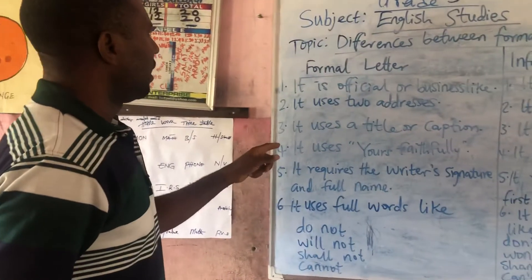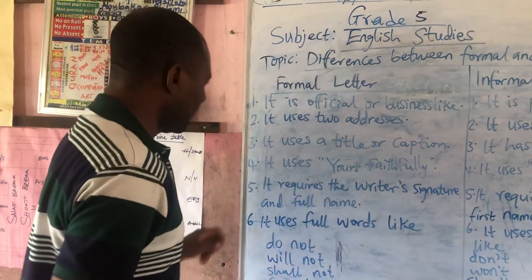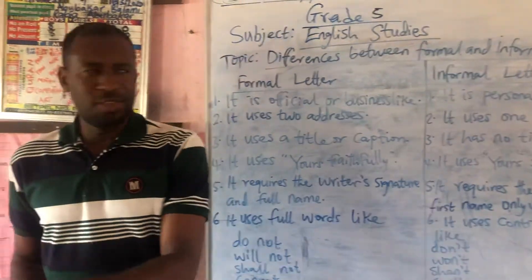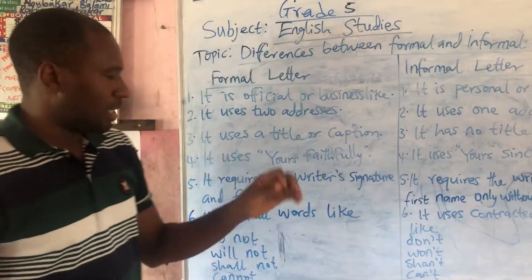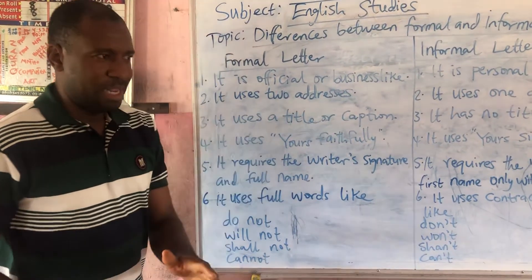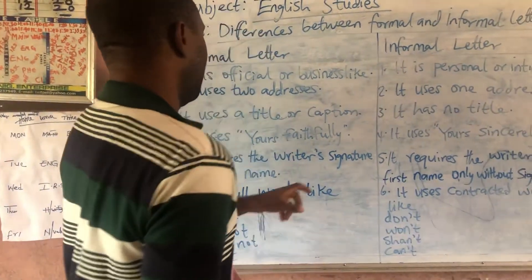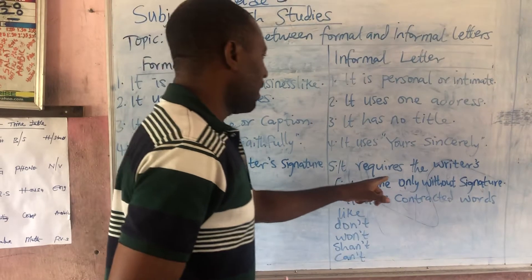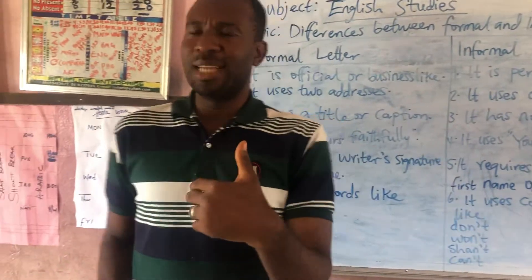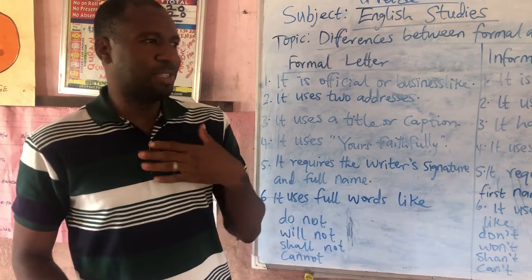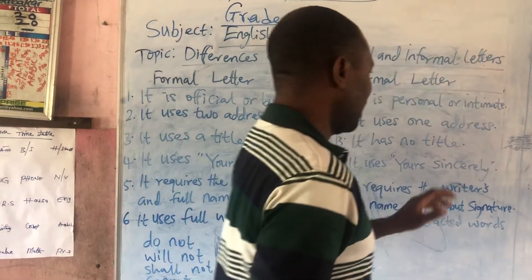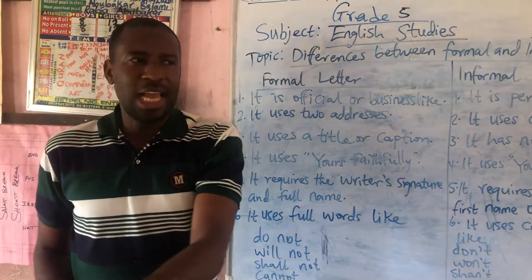Number five: a formal letter requires the writer's signature and full name. In a formal letter, the writer is expected to append his signature at the end — at the subscription. The writer's first name and surname should both be present. In an informal letter, it requires the writer's first name only, without a signature. The writer is expected to write something like 'Yours sincerely' followed by their first name only.